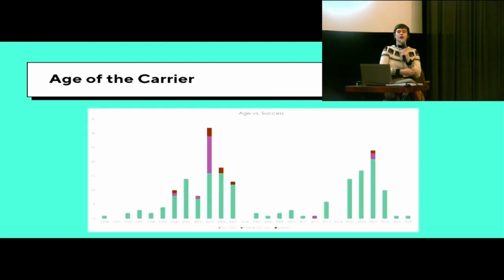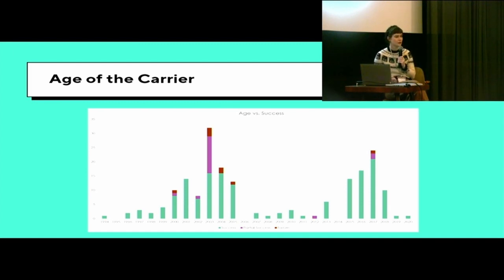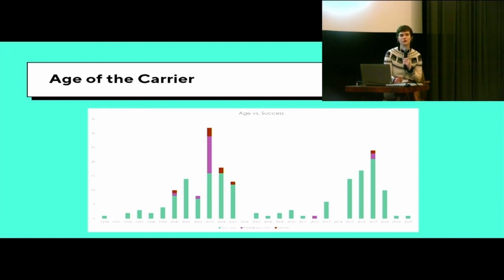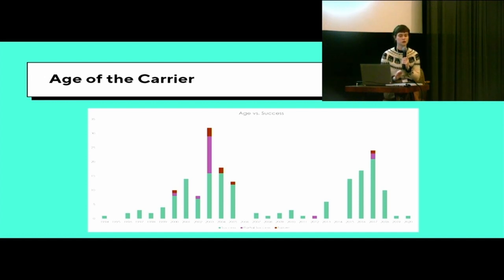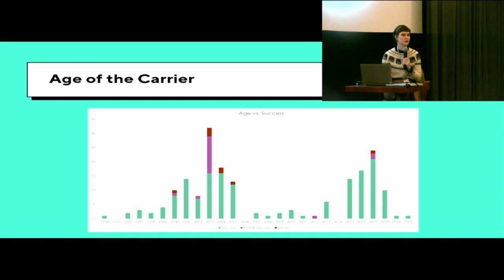The first thing we looked at was the age of the carrier. I was assuming the older the carrier, the higher the failure rate — however, that doesn't seem to be the case for us. Everything before 2000: fine, no problems. Everything between 2000 and 2005, and especially 2003, was really problematic. 2003 is the year we have the most disks from, but also the highest failure rate — about 50% of those disks were problematic in some way. It's not necessarily one specific brand that keeps failing; it's just that specific year that seems to have a lot of problems.